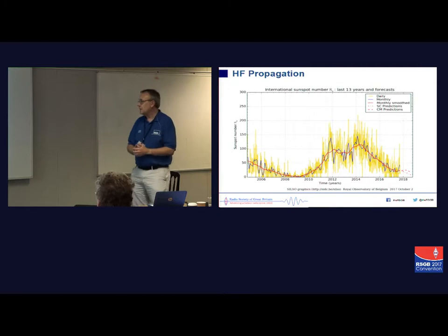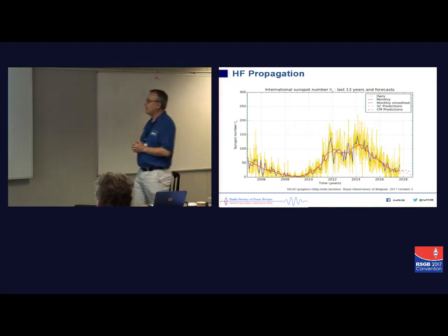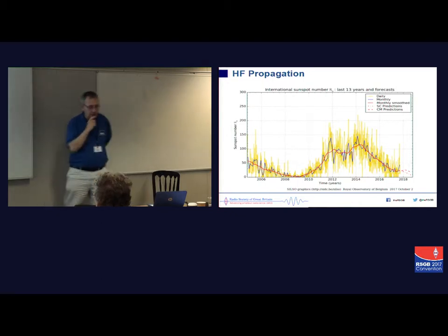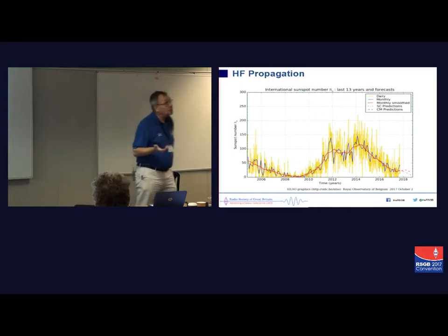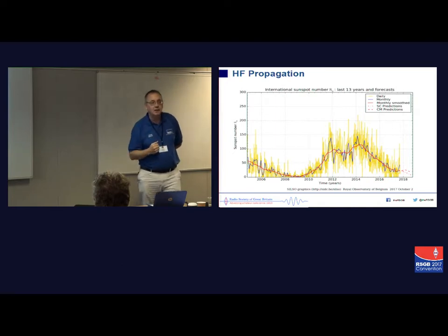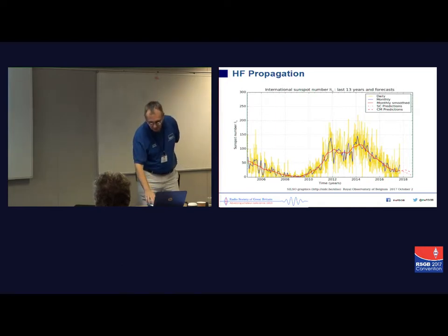This chart from the Royal Observatory of Belgium shows their predictions of sunspot minimum. Again, we're looking at 2019-2020, which then puts the next sunspot maximum at about 2026 or thereabouts. Come and see me in nine or ten years' time to see whether we're right or not.